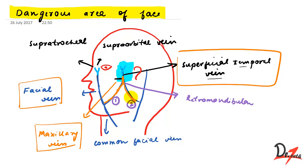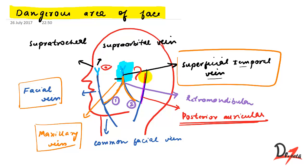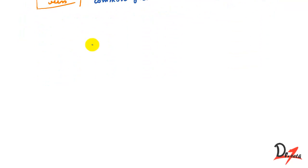The posterior division unites with the posterior auricular vein — called posterior auricular because it is behind the ear. The posterior division of the retromandibular vein unites with the posterior auricular vein and then proceeds downward to form the external jugular vein.